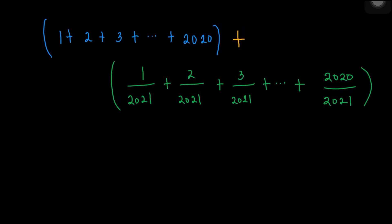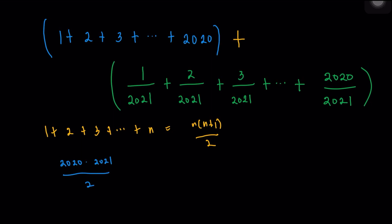We have the nice formula: 1 plus 2 plus 3 all the way to n equals n times (n+1) divided by 2. The blue sum becomes 2020 times 2021 divided by 2. I can cancel the 2020 and the 2 nicely. For the green sum, it's just adding the numerators, and the numerators are the first 2020 positive integers, so their sum is 2020 times 2021 divided by 2. We then divide by 2021 because that's the denominator. I can cancel the 2020 and the 2, and additionally cancel the 2021.